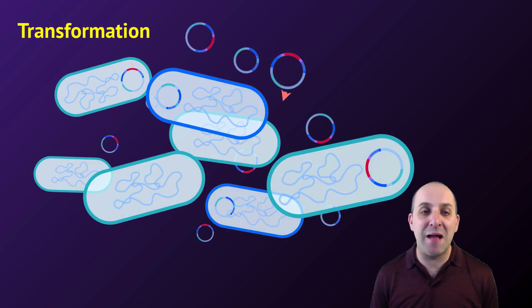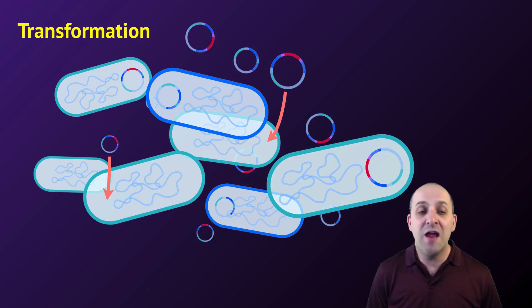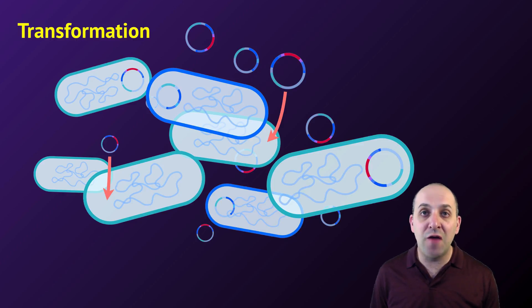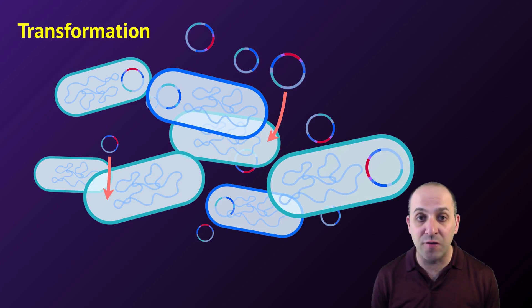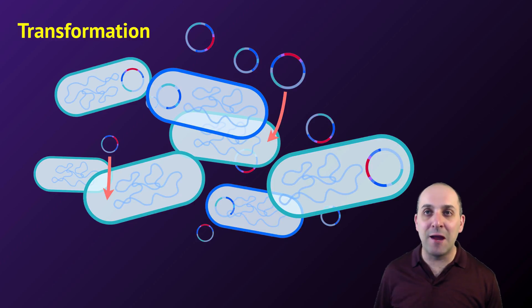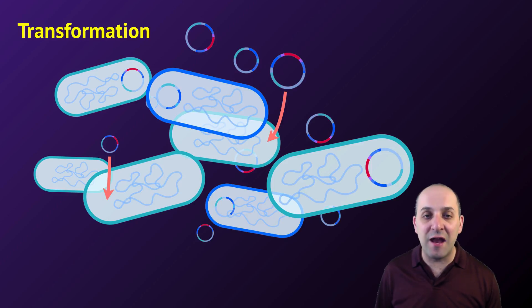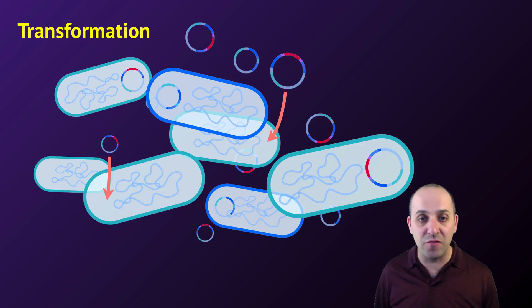The process by which we get bacterial cells to take in foreign genetic material is known as transformation. This is a process that bacteria do naturally, but we have ways to make it happen at a higher rate in the lab. This generally involves exposing the bacteria to particular chemicals — usually calcium chloride — and rapidly oscillating the temperature to induce what's known as heat shock. Both of these processes are designed to make the bacteria competent to take in the foreign plasmids.